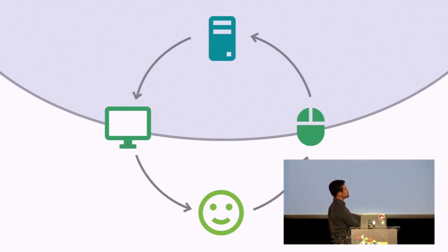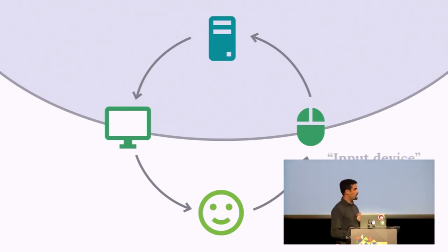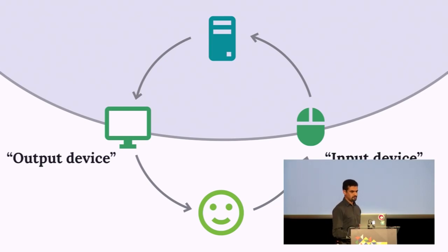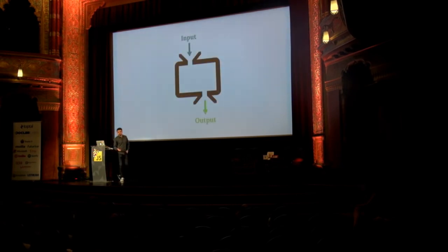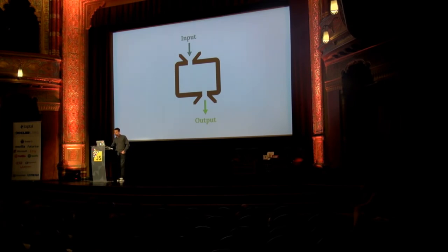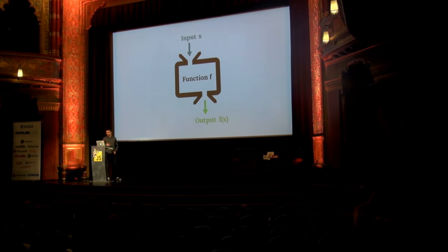In this system, the interface devices are often called input device and output device — graphics output and that kind of stuff. Whenever you have an input and an output, what do you have in between? A function. So X is your mouse and your screen is F of X — UIs as functions.